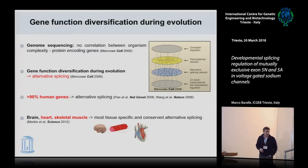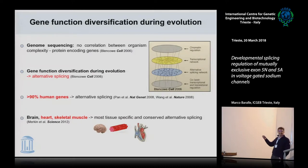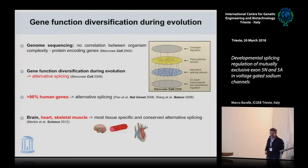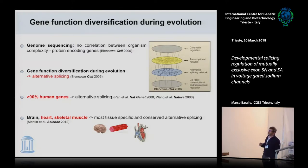Through genome sequencing, although there is a significant difference between organisms in the non-coding RNA, there really isn't a correlation — one of the things that came out over the last years of sequencing of genomes is there really is no correlation between organism complexity and the protein-coding genes.